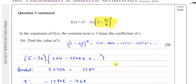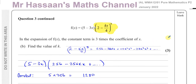That concludes question three, part b, from the January 2022 Pure Mathematics P2 paper. Other questions from this paper can be found in the playlist. Other binomial expansion questions are also in a separate playlist. You can subscribe to the channel by clicking the link.